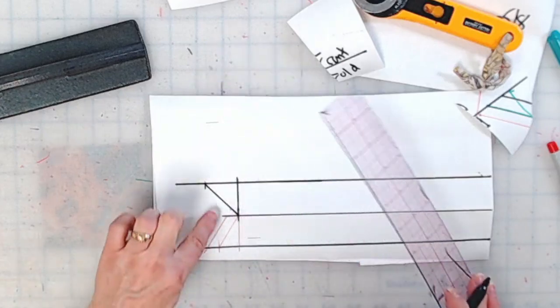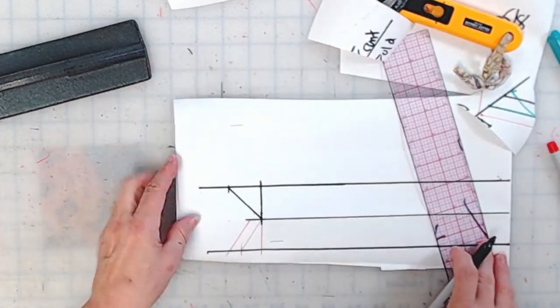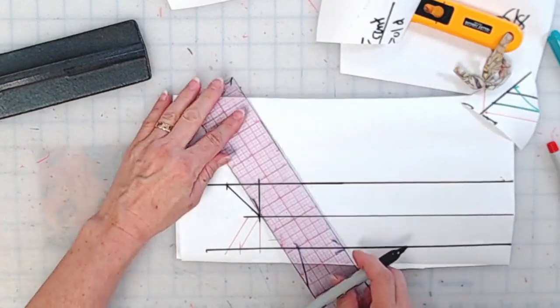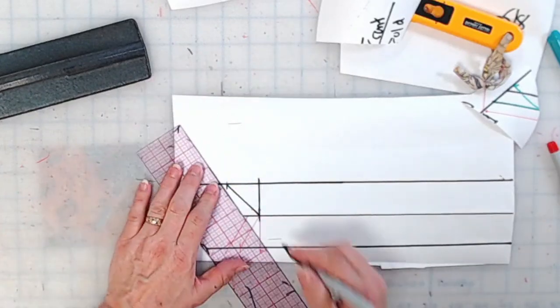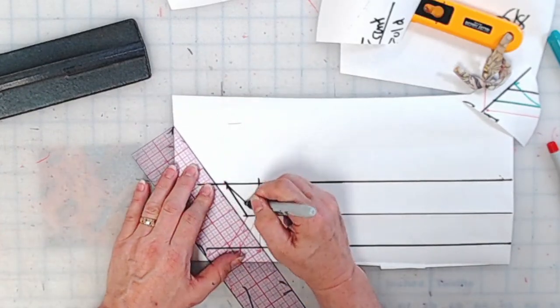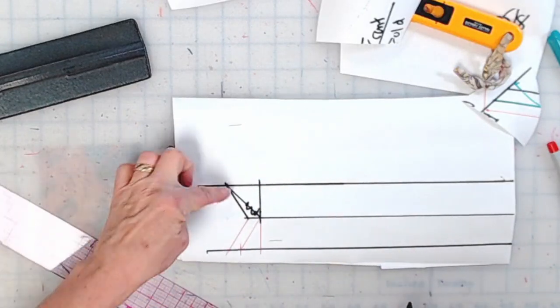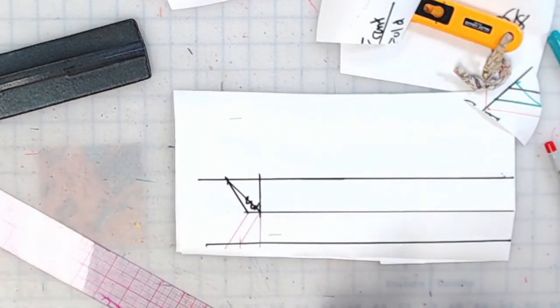And now we're going to connect these two points just like this. And now we have a mirror image of this. Actually, we're going to connect it to right here. Sorry. Not here. Just like this. You want a mirror image. And now your neck band is ready to go.